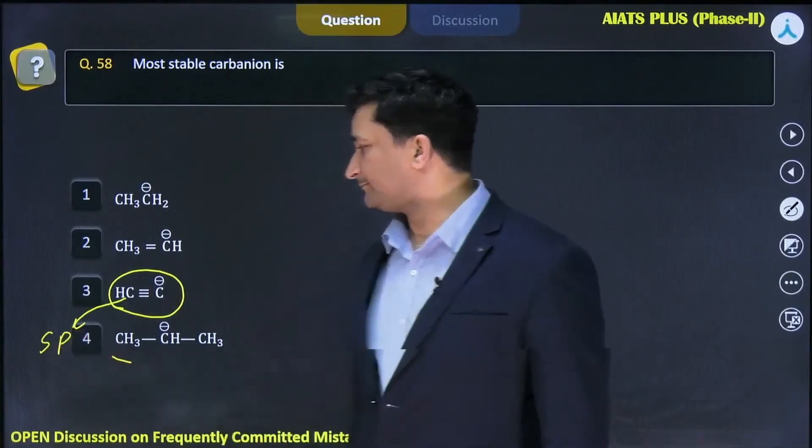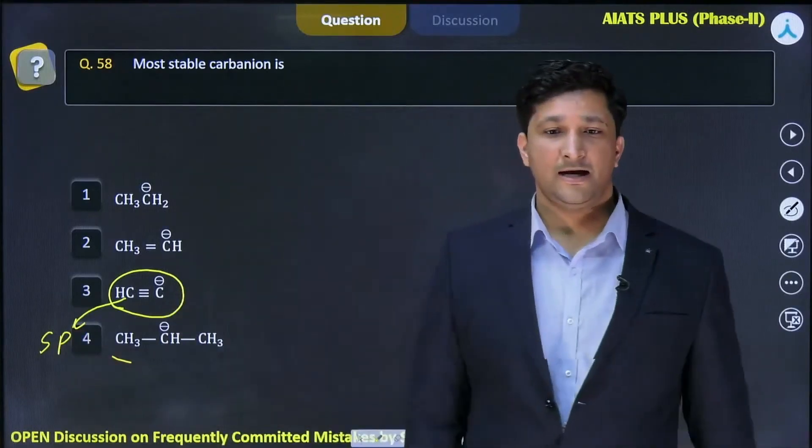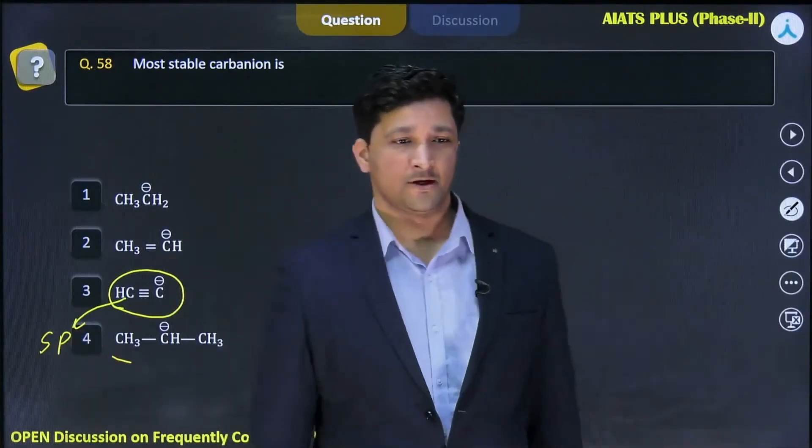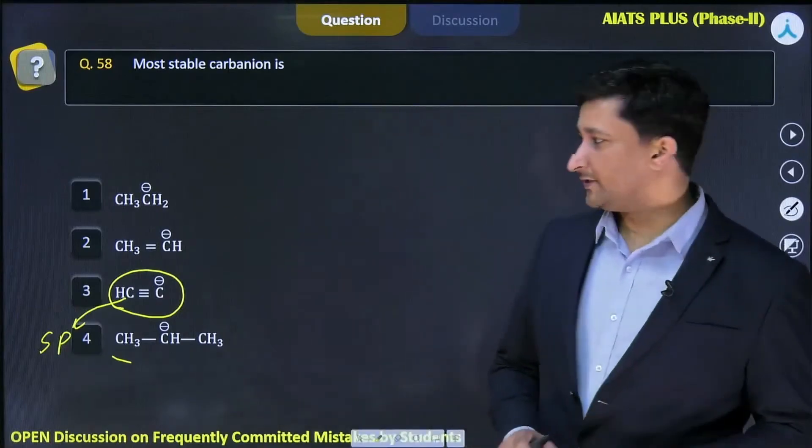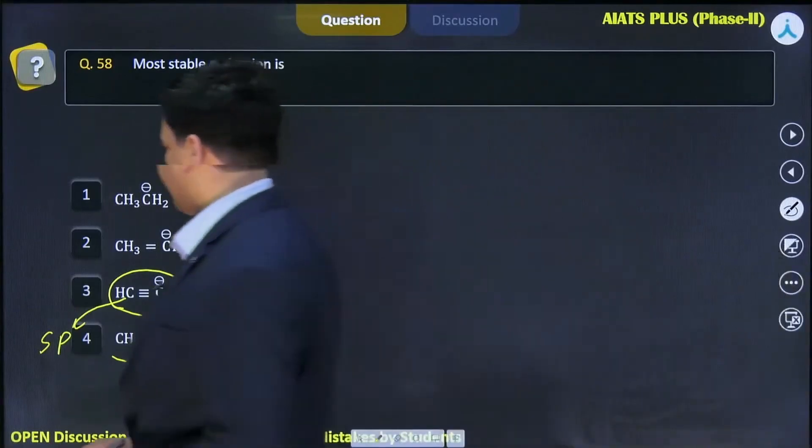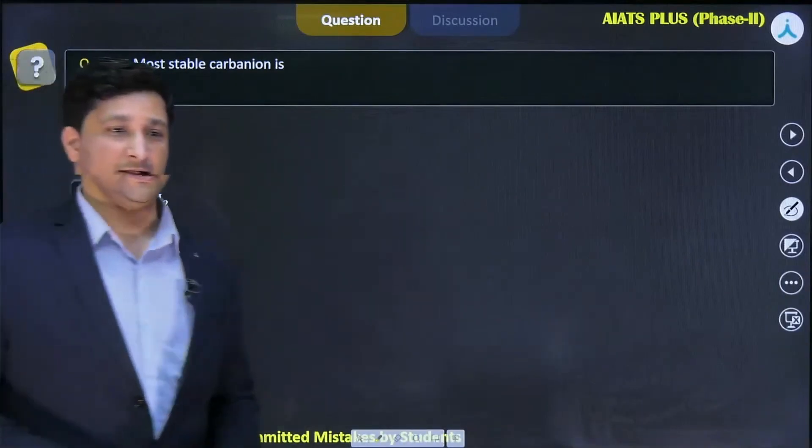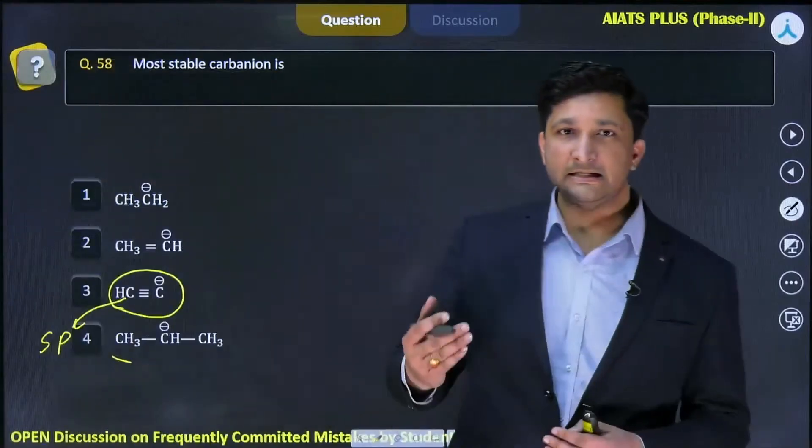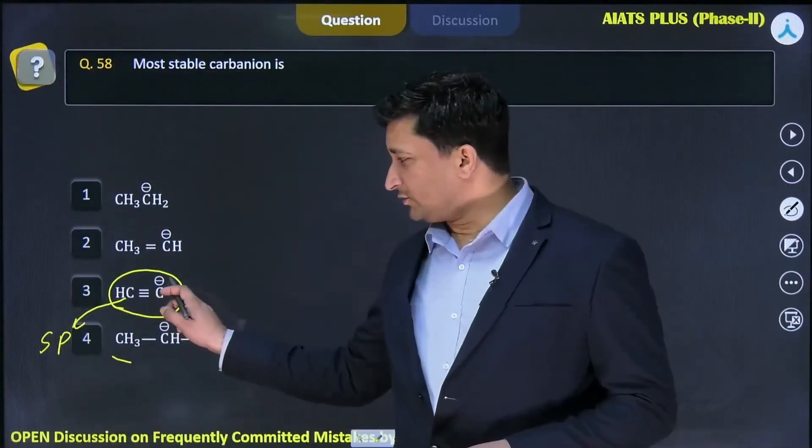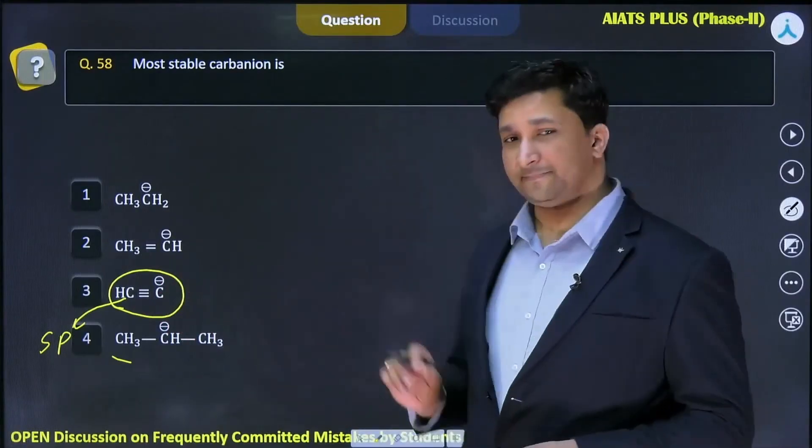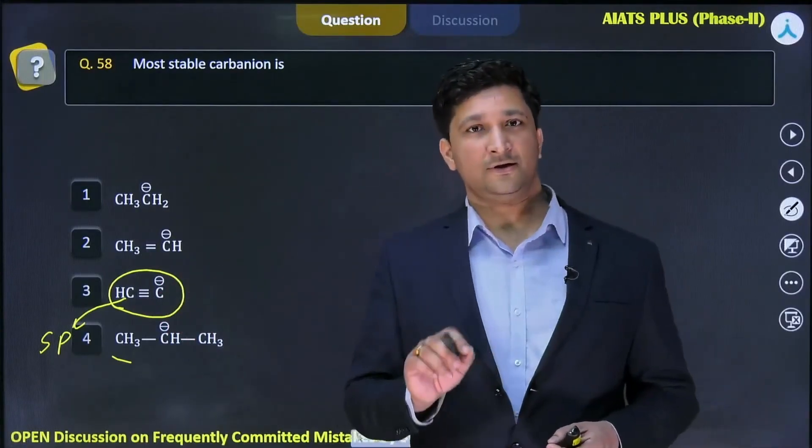Because of this sp hybridization, what happens here is that the tendency for stability increases a lot, because the tendency to donate these electrons - hyperconjugation I have already told you - takes place in case of free radicals or carbocations.